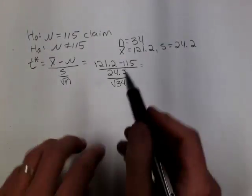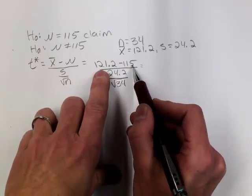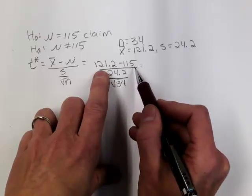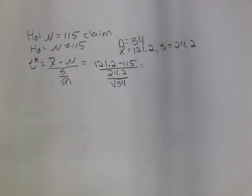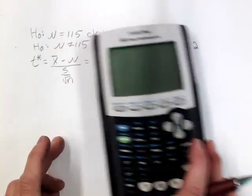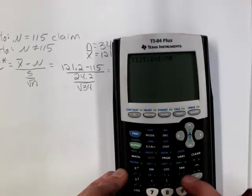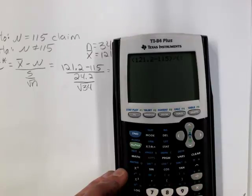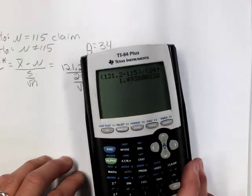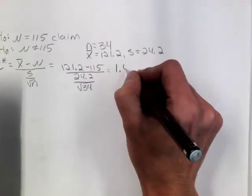So again, we're looking at the difference here in the numerator. We did get a sample value that was not equal to 115. But what we want to know is, is this difference statistically significant? So putting this in the calculator, I'm going to put parentheses in the numerator and parentheses in the denominator because this thing can't read my mind. Do you get a value of 1.494-ish? So it's about 1.494.